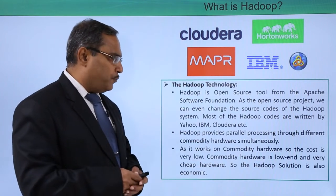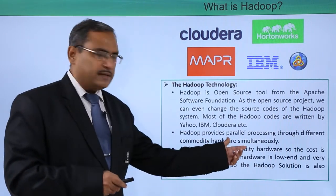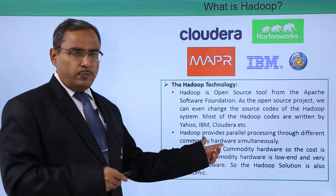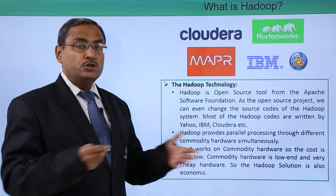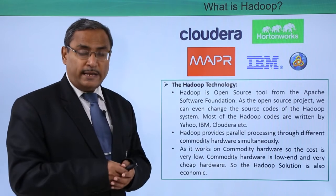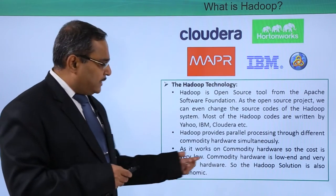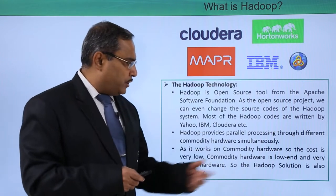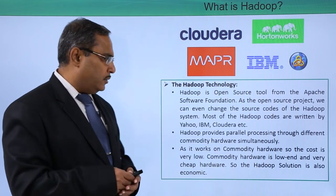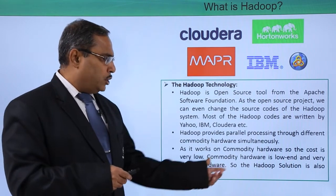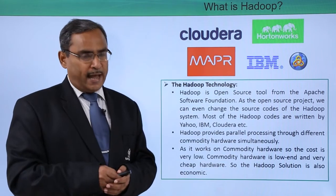Hadoop provides parallel processing through different commodity hardware simultaneously. Commodity hardware means cheap hardware, with the help of which we can have parallel processing. So data processing and analysis will be done in a very fast way. As it works on commodity hardware, the cost is very low — commodity hardware is low-end and very cheap, making the Hadoop solution economic and affordable.